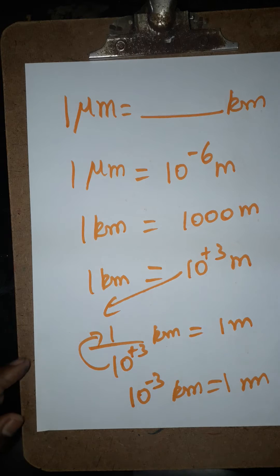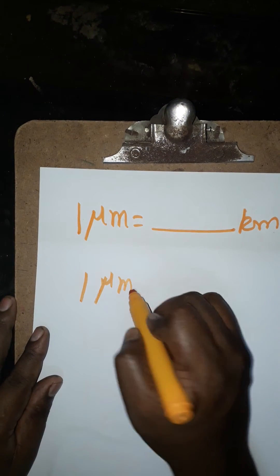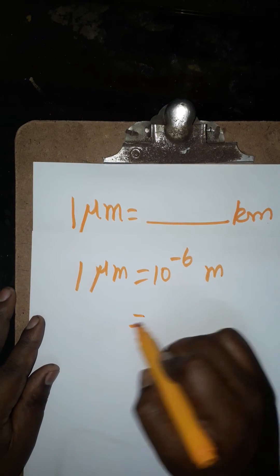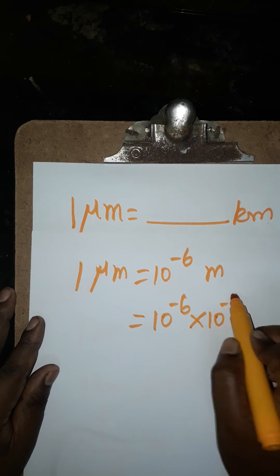Finally, I am going to do the conversion. See here, 1 micrometer is 10 power minus 6 meters. We know 1 meter is 10 power minus 3 kilometers.